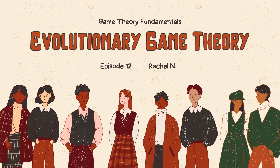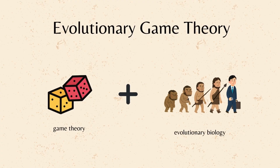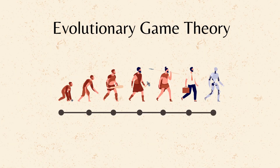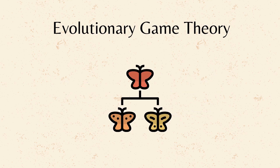Hello everyone, welcome back to Game Theory Fundamentals episode 12, Evolutionary Game Theory. Evolutionary Game Theory combines the principles of Game Theory with Evolutionary Biology, focusing on how strategies evolve over time within populations of interacting individuals. It models how organisms with different traits or strategies compete and reproduce, leading to changes in the population's makeup over generations.